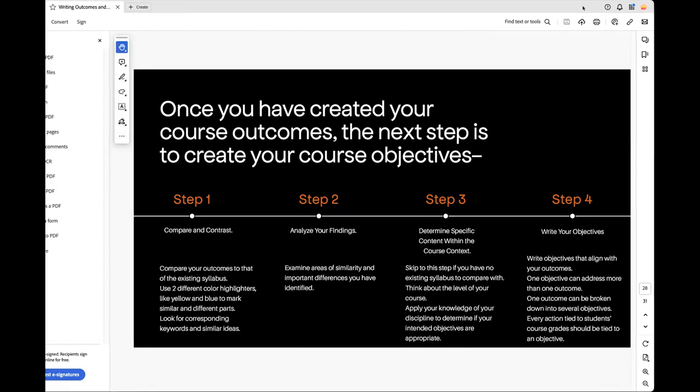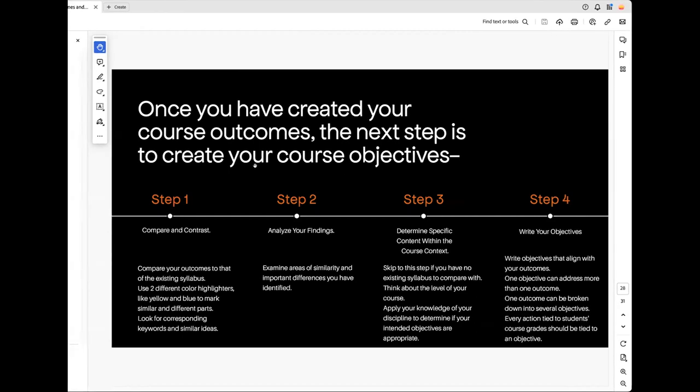And then lastly, write those objectives, write objectives that align with your outcomes. Sometimes they're not a one to one. Sometimes an objective includes two or three different outcomes into one objective that you have for a lesson. Sometimes you have to kind of look at that and not try to think of it as a one to one comparison. And then lastly, every action tied to a student's course grade should be tied to an objective. I firmly believe that if you have an attendance policy, and you have a very specific attendance policy for your course, that is an opportunity for you to reinforce that outcome in that course that stresses professionalism, that stresses punctuality or something along those lines that really helps you reinforce the bigger scheme, because that attendance, that's a specific activity, right? Think about that ziggurat, that goes to that big outcome of where we want to be.